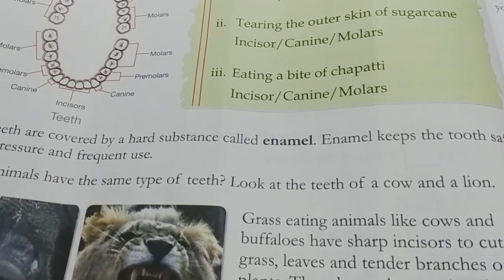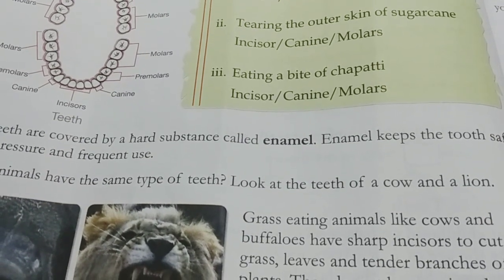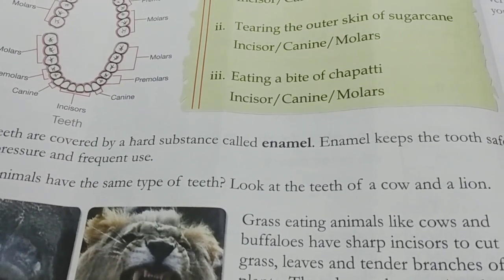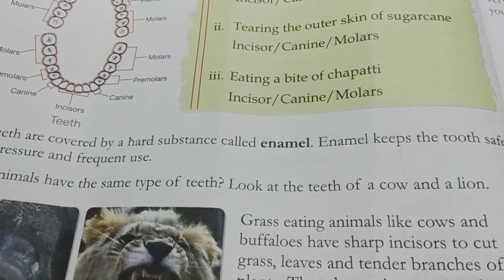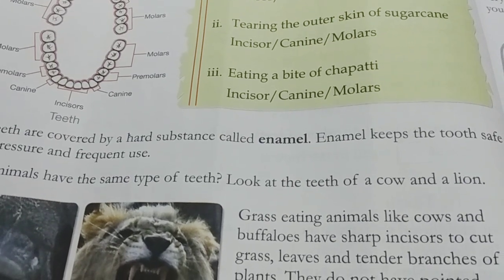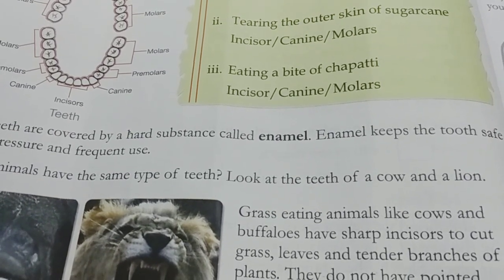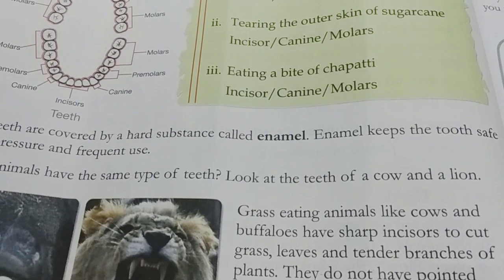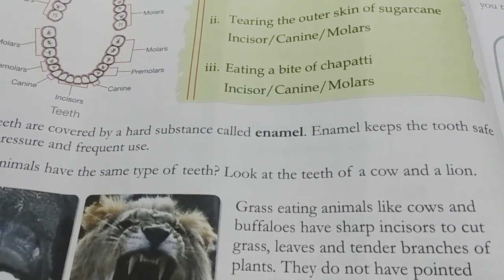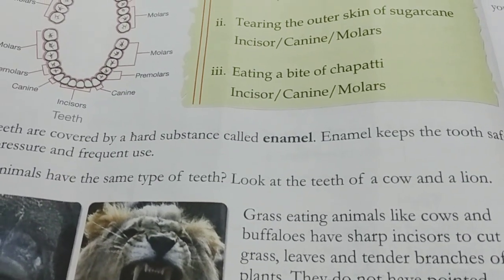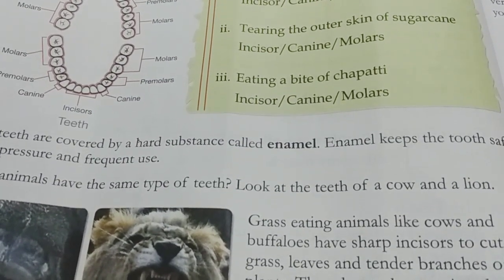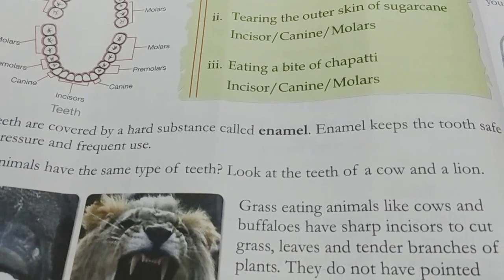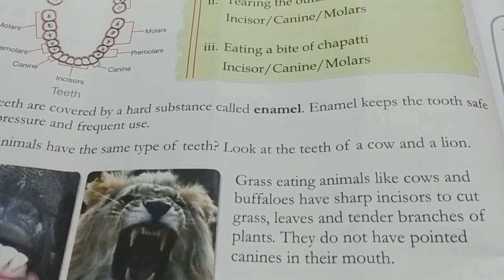We have two types of teeth: milk teeth and permanent teeth. Milk teeth are temporary teeth. Once the milk teeth go, we get permanent teeth. We have four types of teeth in our mouth.